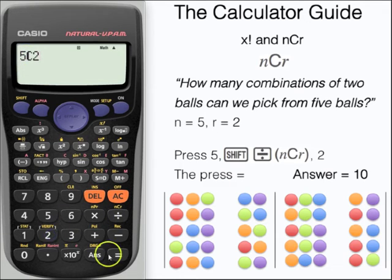We should see a little C come up on the screen, and then press 2. And here's our answer again, 10. It's certainly a quicker way of finding out a combination than using the formula.